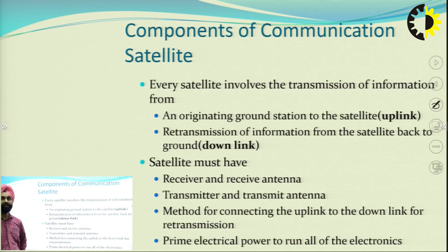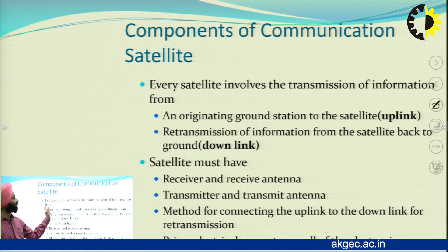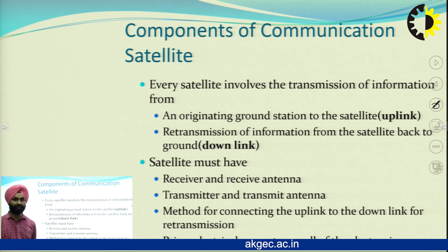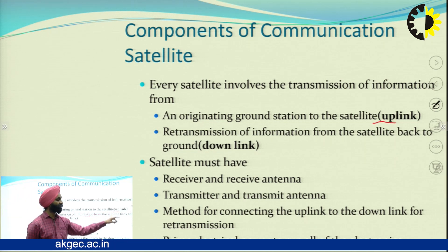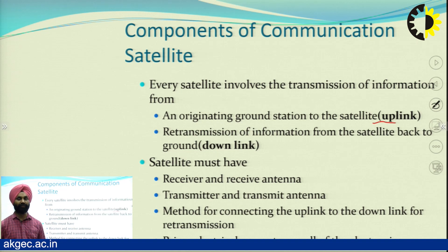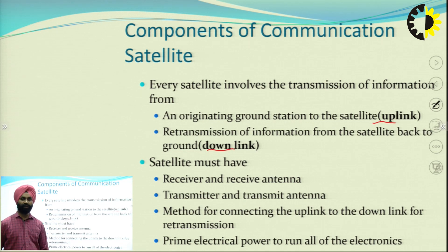Moving to the components of satellite communication: every satellite has two segments involving transmission of information. It transmits information originating at a ground station — that ground station sending information to the satellite is known as the uplink. After processing or without processing, the signal is retransmitted back to users or other stations, which is known as the downlink.